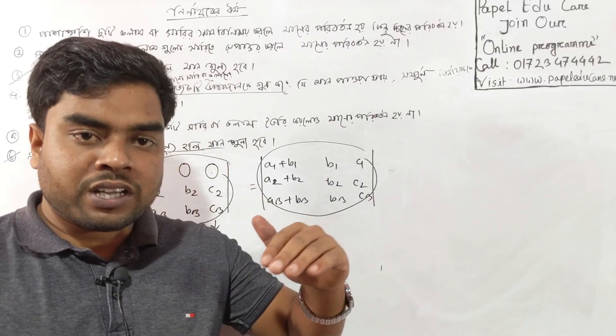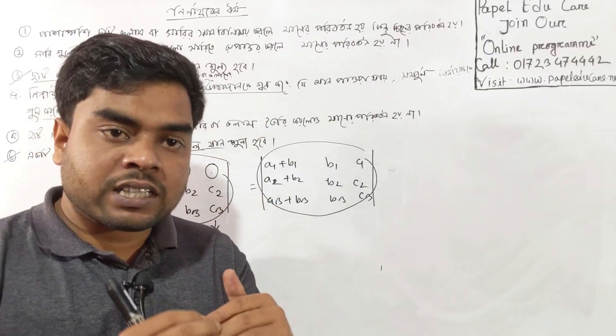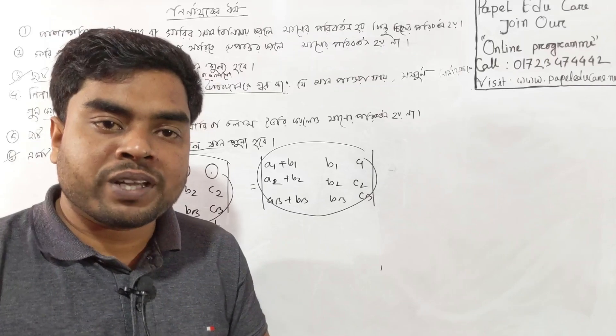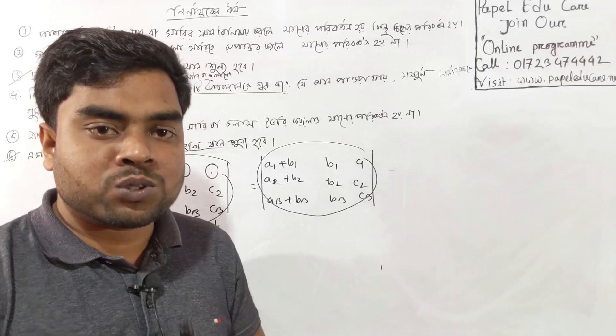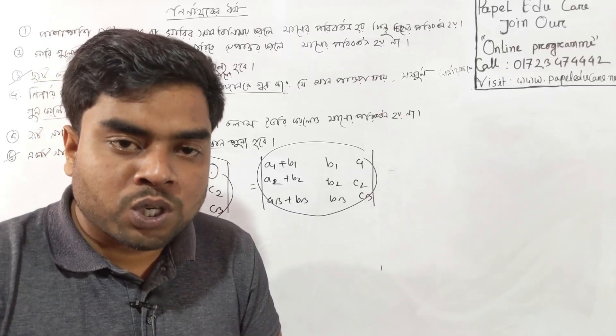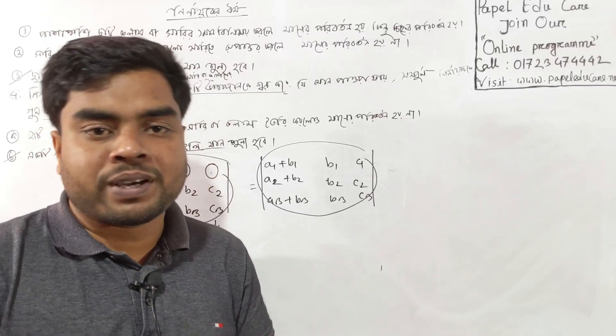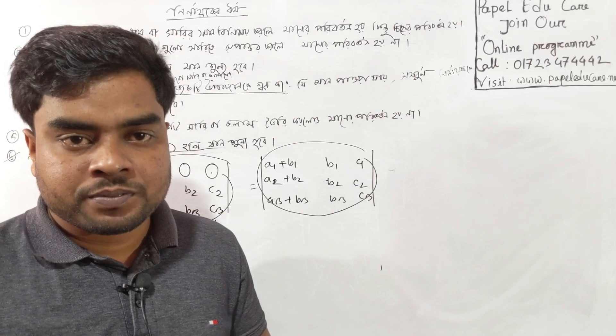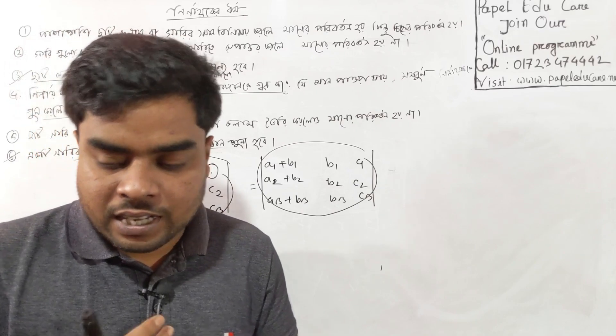Ektar ninaikar — ektar sari, ektar kolum — eir shakol upadhaan jodhi shunno hai, shekhetre ninaikar mantao shunno hajbhe. Clear?